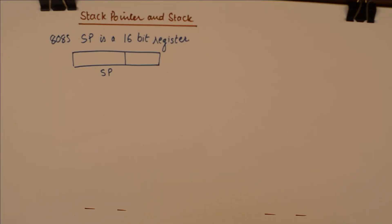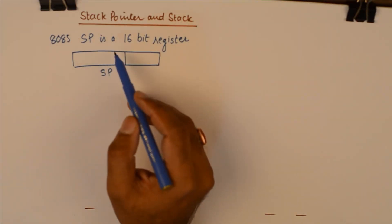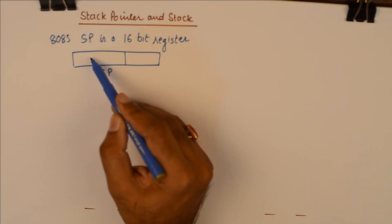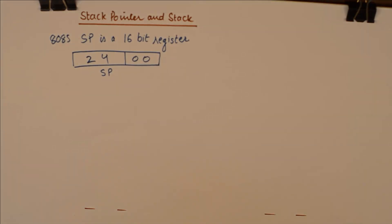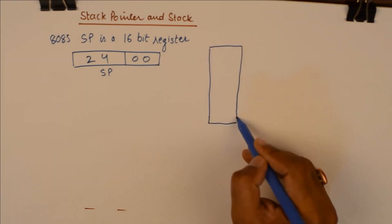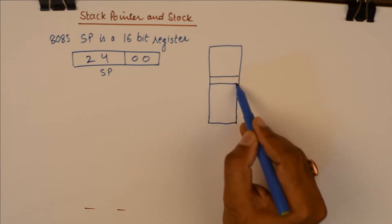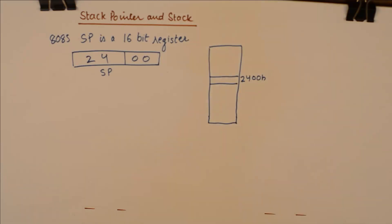So what does that mean? Let us explore this. Now if you have stack pointer and it has a value let us say 2400 in it, that would mean that my stack has a top on the memory location 2400H.